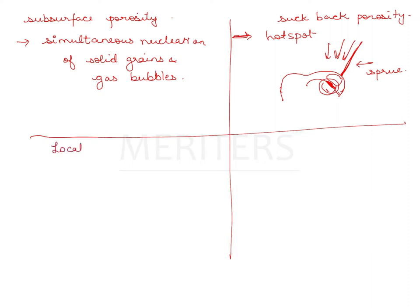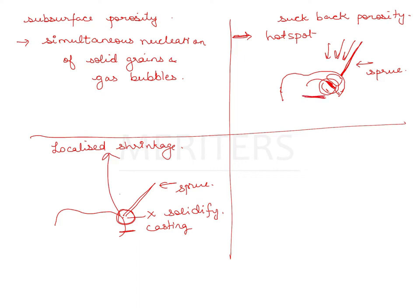Talking of localized shrinkage porosity, which is similar to suck back but different. Here the sprue solidifies first. The casting also solidifies, but the junction of the sprue and casting is the last to solidify and shrink. So this is going to cause a porosity. Suck back porosity is on the other side against the wall, on the intaglio surface. Here it's on the external surface.